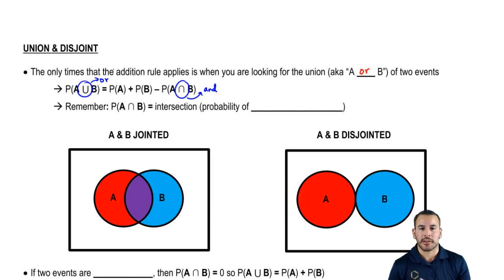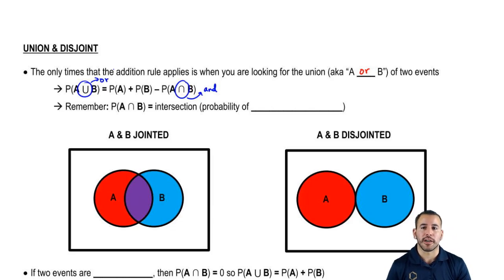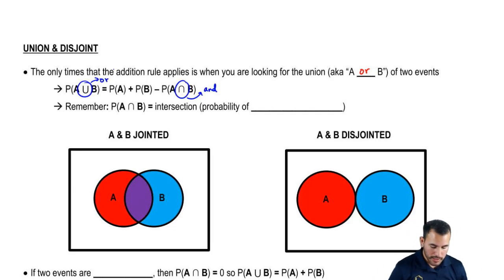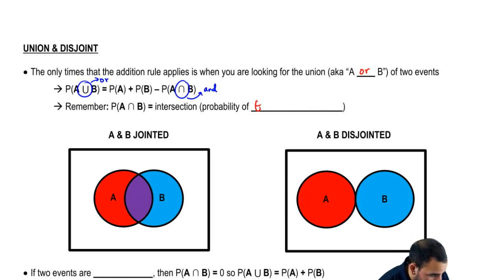Sounds confusing, right? We'll go ahead and do some practice problems to kind of reinforce that formula. But remember, probability of A and B is the intersection — the probability of both events A and B.